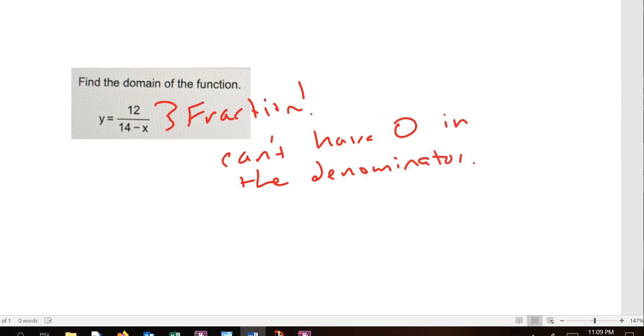What that means is the only number we can't use is whatever makes the denominator equal to zero. When you have a rational function like this, set the denominator equal to zero and solve. So 14 minus x equals 0. I can add x to both sides and that gives me 14 equals x.